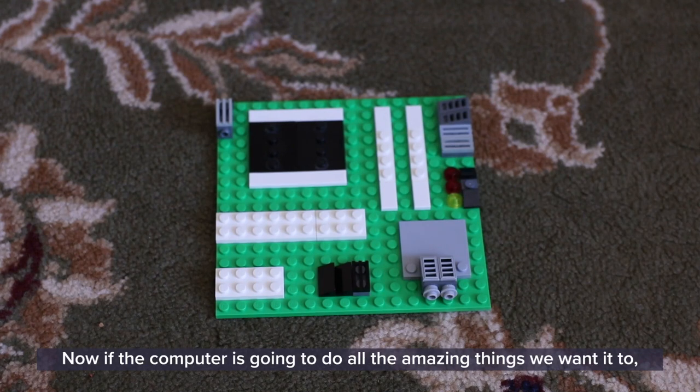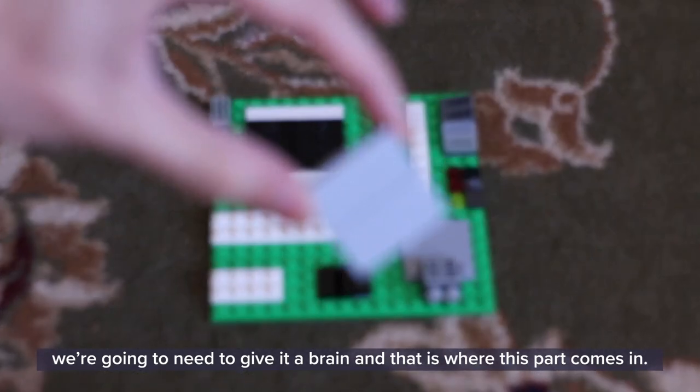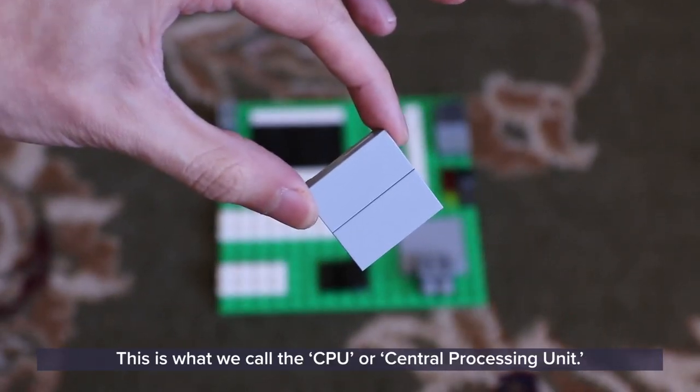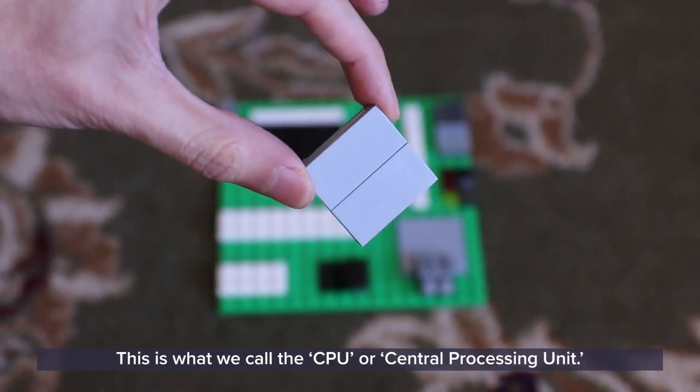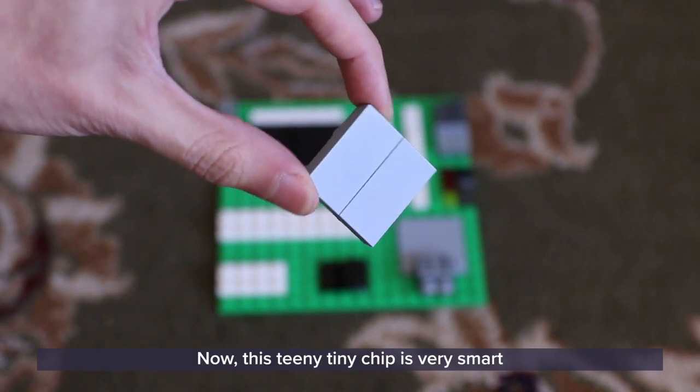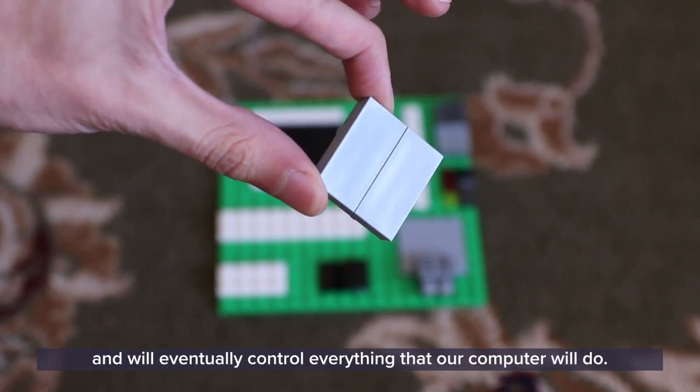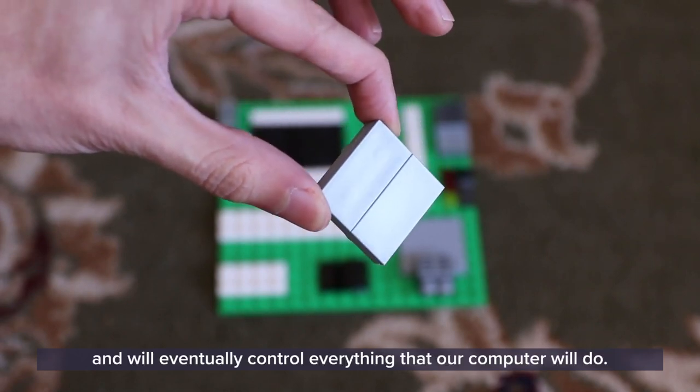Now, if our computer is going to do all the amazing things we want it to, we're going to need to give it a brain. And that is where this part comes in. This is what we call the CPU or central processing unit. Now, this teeny tiny chip is very smart and will eventually control everything that our computer will do.